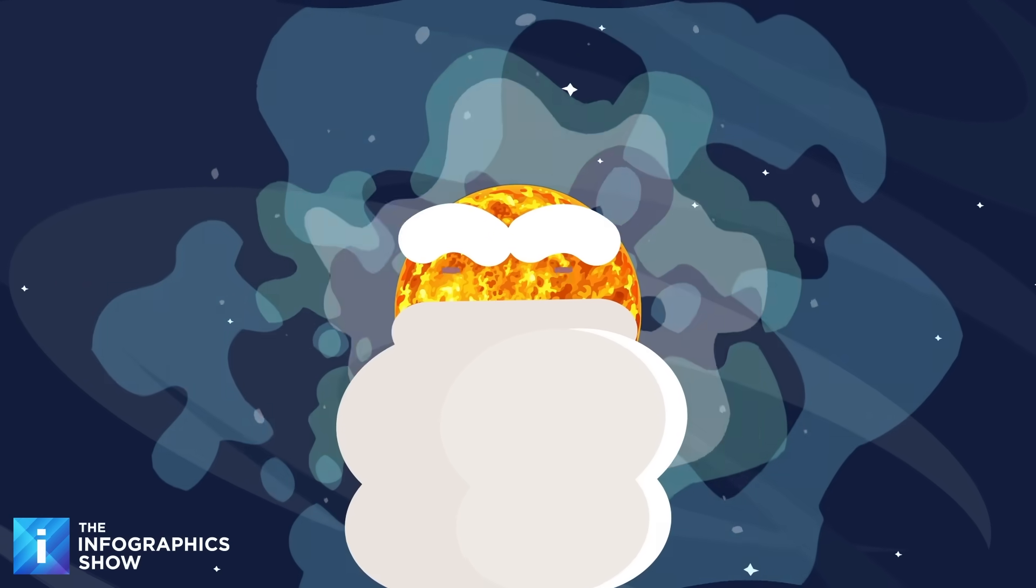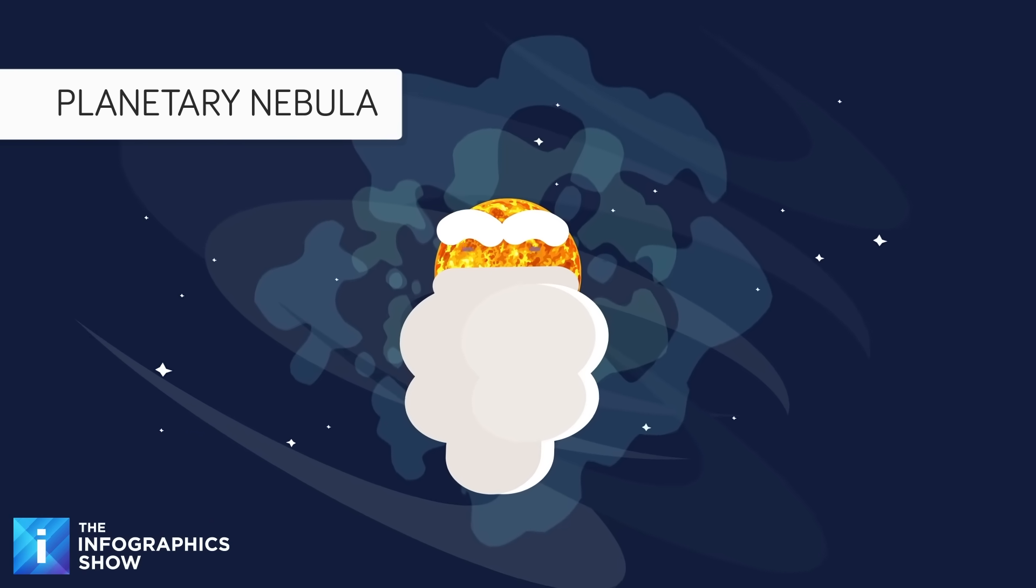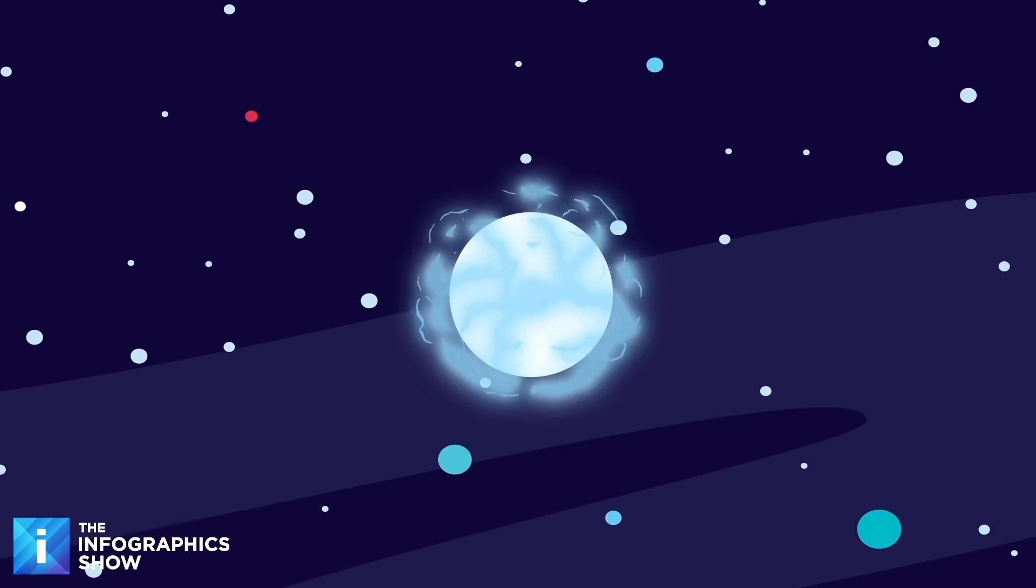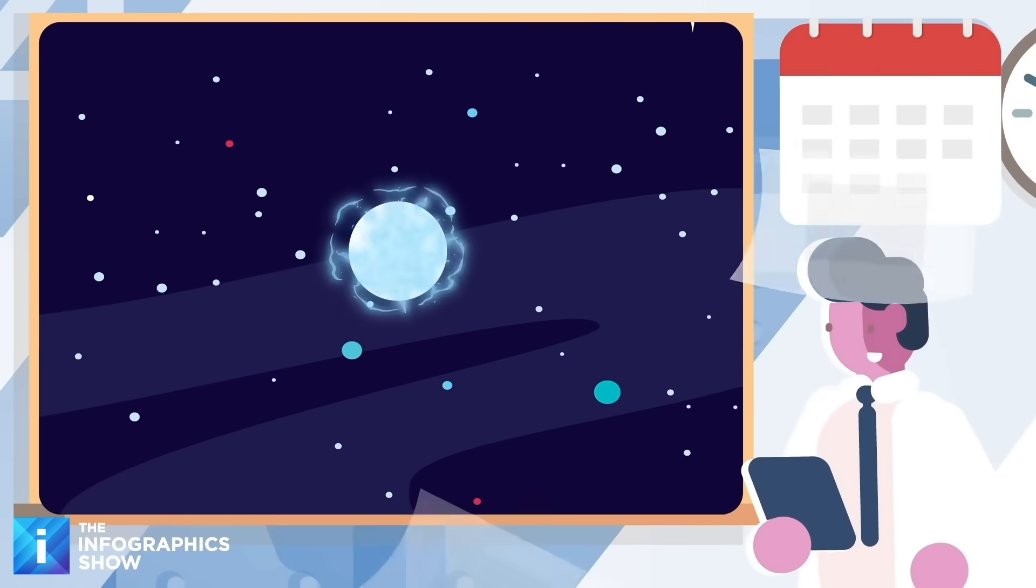It starts to puff out its outer layers, creating what we call a planetary nebula, like a cosmic fart cloud. The core left behind is a white dwarf, a relatively small, dim, ultra-dense ember that can smolder for billions of years.